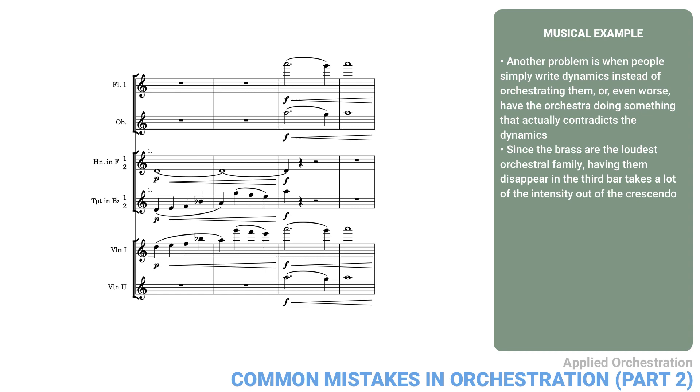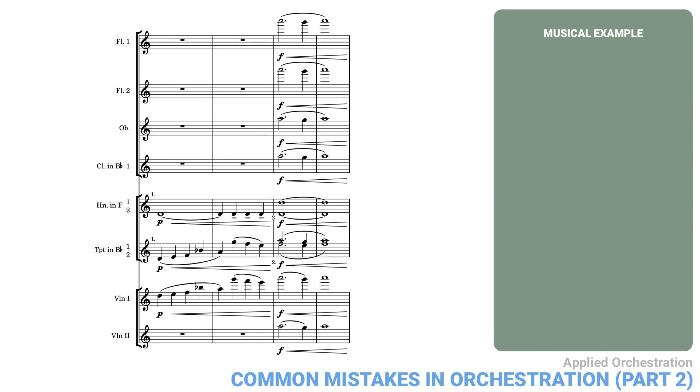Here's a much better version. Here, not only do the brass remain to the end, but the repeated notes in the horns in the second bar, and the added thirds in the trumpet at the climax, add intensity. The crescendo here is part of the orchestration itself.